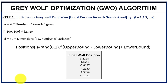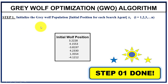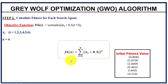For the example, we initialize the gray wolf population with six wolves. The number of search agents is six, the range is minus 100 to 100, and the dimension is 30. Using this setup in MATLAB, you can generate the initial population. Each wolf has a position corresponding to wolf one through wolf six.